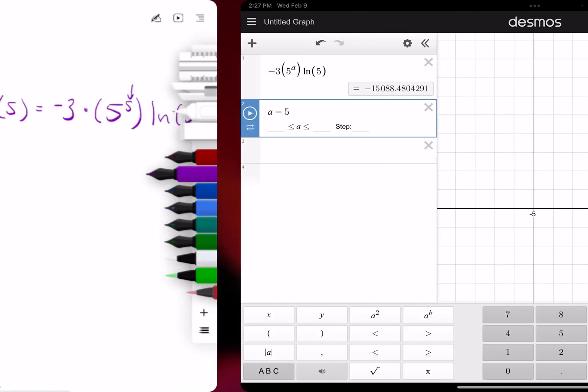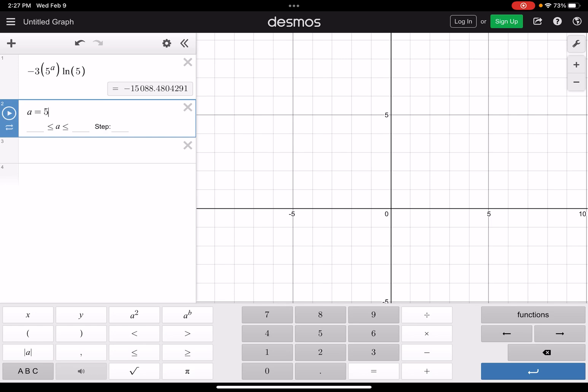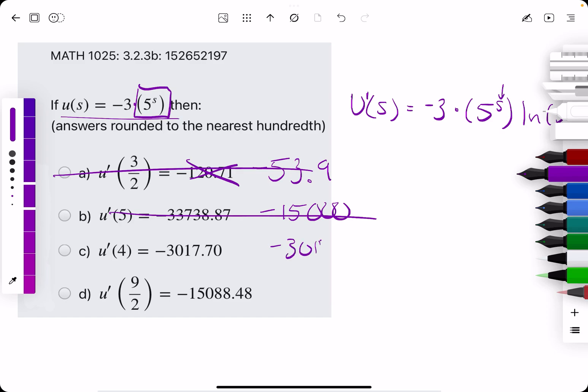We get negative 15,000-ish. So that does not match negative 33,000. We plug in 4, and we get negative 3,017. That matches. So that's probably our answer.